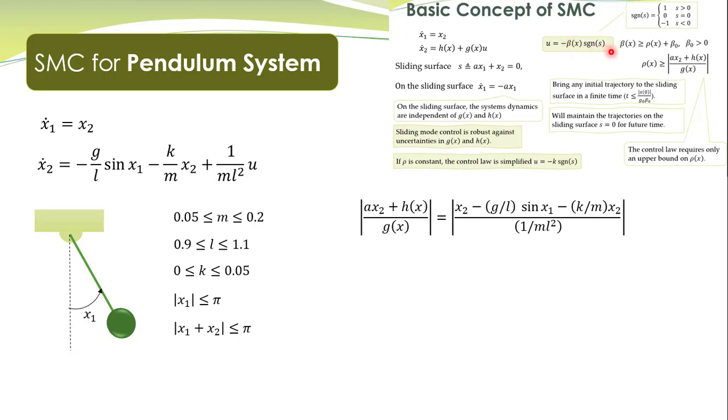In this control law, beta(x) is given here as ρ(x) plus β₀, and ρ(x) is given here. The thing we need to determine is an upper bound on this expression: the absolute value of ax₂ plus h(x) over g(x). For simplicity, we have taken a to be equal to one, some positive constant which is equal to one.